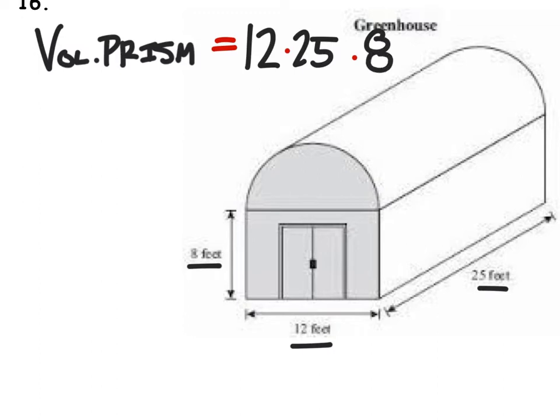Not that it really matters which is which, because it's all going to be the same after we multiply them. And the volume of the prism, well, that's not the answer. That's just the volume of the prism, 2,400 cubic feet.